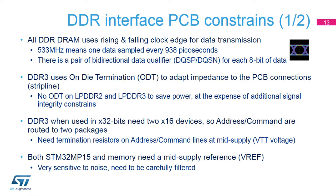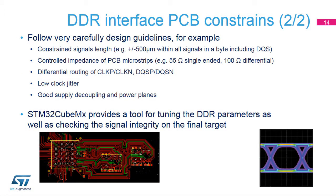When designing a DDR system, DDR constraints must absolutely be taken into account. Refer to AN5031 and AN5122 for details. STM32CubeMX provides a tool that helps tuning the DDR parameters and checking the DDR signal integrity directly on the final target. More details are provided in the ecosystem training part.